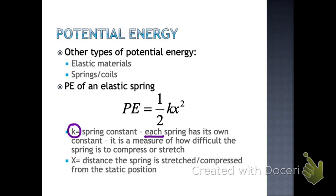X in this equation is the distance stretched or compressed from the static position, and it needs to be measured in meters. Since springs are usually compressed by small amounts, that value is often given in centimeters, so we need to convert. The unit for a spring constant k is Newtons divided by meters. The spring constant is given in the problem or solved for — you won't memorize it because it's not a single constant number.